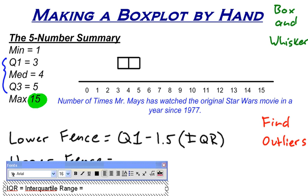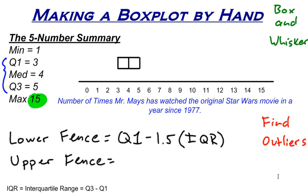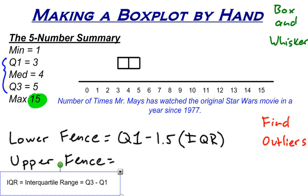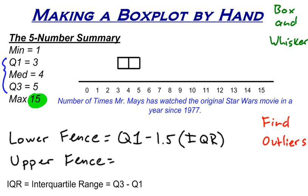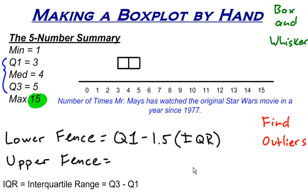How do we find the IQR? We take the value for the third quartile minus the value for the first quartile. That is how we find the interquartile range. Let's find it now, because without the IQR we can't find where the upper and lower fences are. Q3 is 5, Q1 is 3, so we go 5 minus 3, which is 2. So our interquartile range is 2.